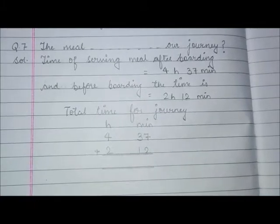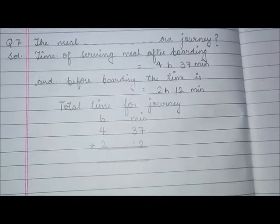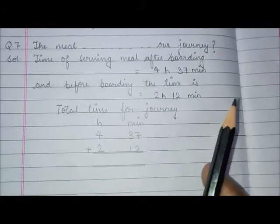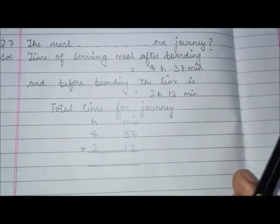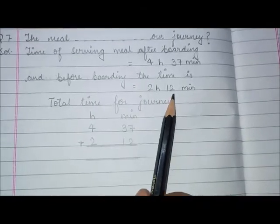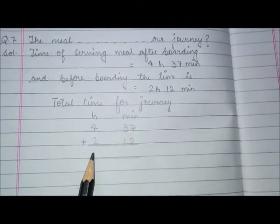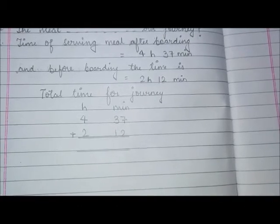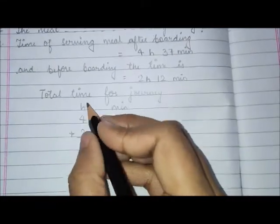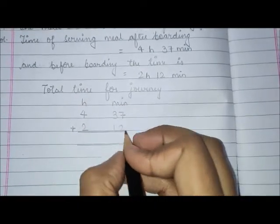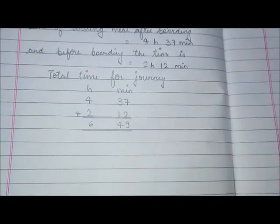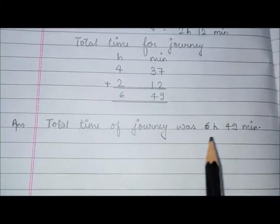Question number 7: The meal on Lal Express was served 4 hours 37 minutes after we boarded. This was 2 hours 12 minutes before we reached Delhi. We have to find how long the journey was. We will add these two times. In separate columns: 7 plus 2 is 9, 3 plus 1 is 4, and 4 plus 2 is 6. So 6 hours 49 minutes is the total journey time.